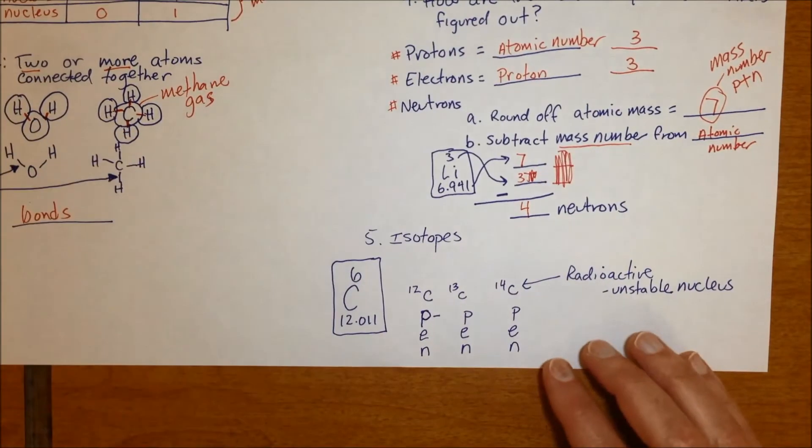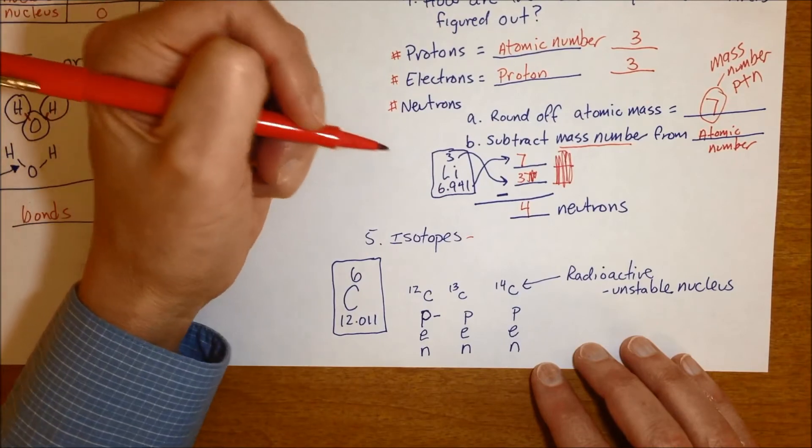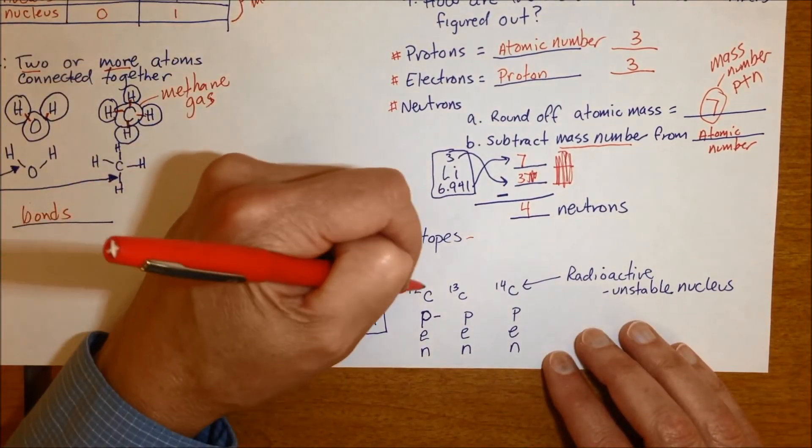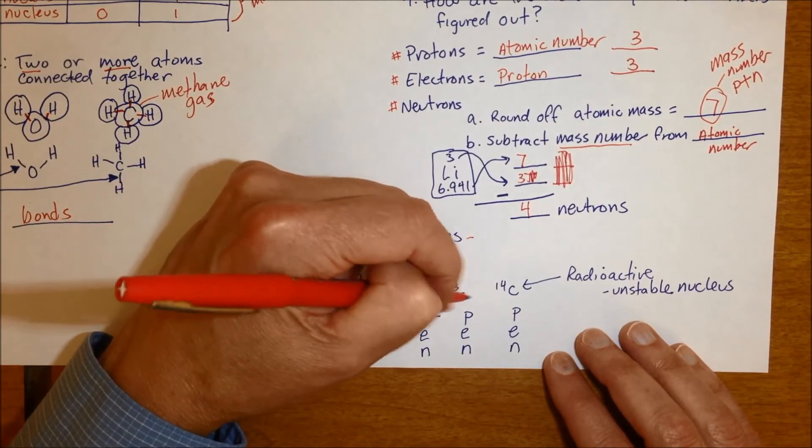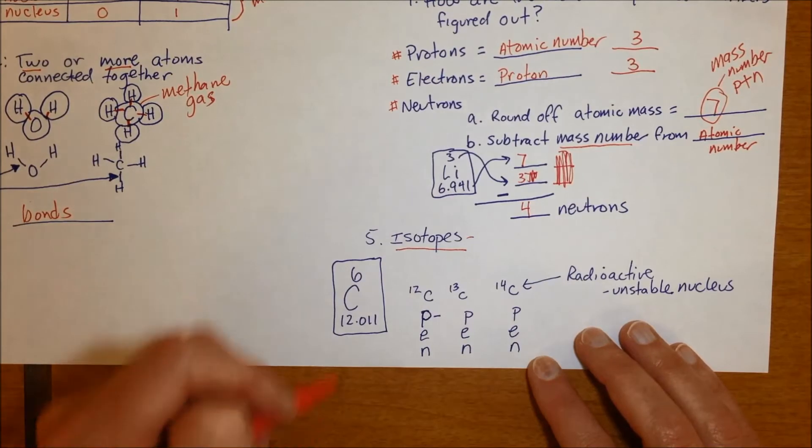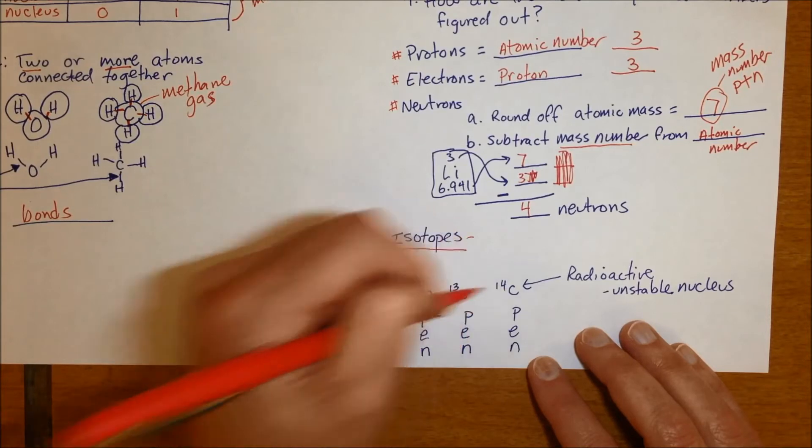All right, last thing. Some atoms have isotopes of each other, which are atoms of the same element with different numbers of neutrons. I'm not going to write that down, you have to have it memorized. But the example that you should know is carbon. Carbon comes in three forms, another way of saying isotopes. These are three isotopes of carbon.